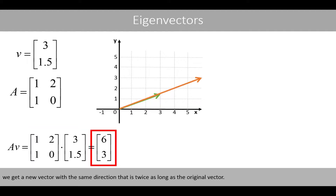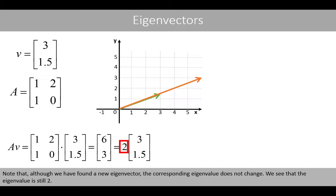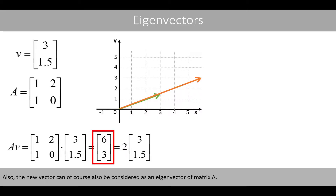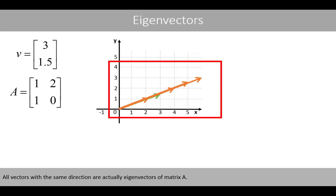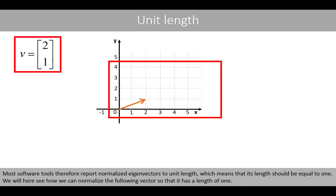Because if we multiply matrix A by vector V, we get a new vector with the same direction that is twice as long as the original vector. Note that although we have found a new eigenvector, the corresponding eigenvalue does not change — the eigenvalue is still 2. All vectors with the same direction are actually eigenvectors of matrix A. Most software tools therefore report normalized eigenvectors to unit length, which means that its length should be equal to 1.